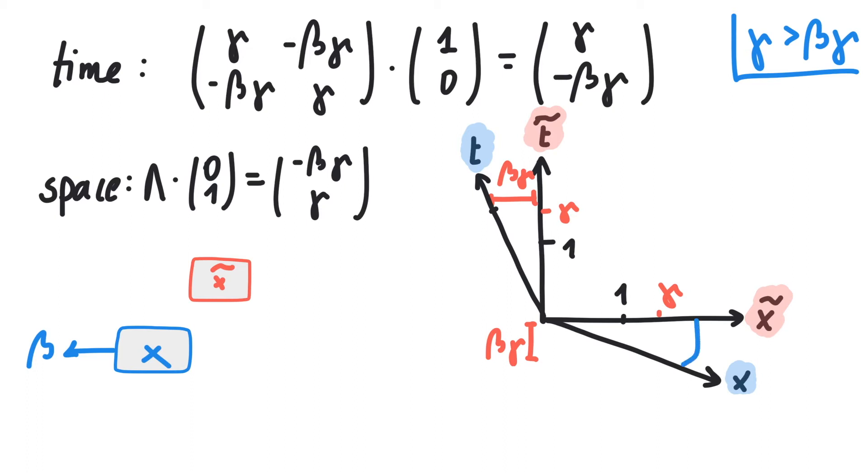Let's also determine the angle between the old and new coordinate axes. We can do this simply by using the tangent function, which connects the angle to the velocity.